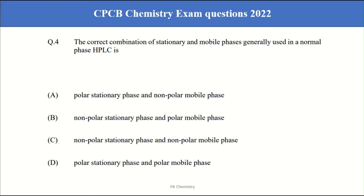The question fourth. The correct combination of stationary and mobile phase generally used in the normal phase in the HPLC. There are two phases normal phase as well as reverse phase. In the case of normal phase, polar stationary phase and a non-polar mobile phase. If they ask reverse, then our answer is non-polar stationary phase and polar mobile phase.